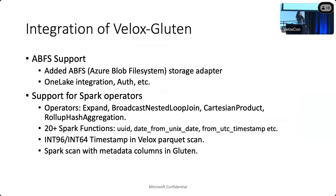We have also added 20-plus Spark functions in both Gluten and Velox, which came up in customer testing. For INT96 and INT64 timestamp, this came up frequently in testing where it was making our scans fall back to Spark, preventing workload improvements. We also added Spark scan with metadata columns in Gluten, which was required for Delta.